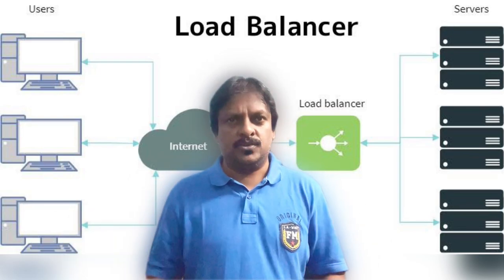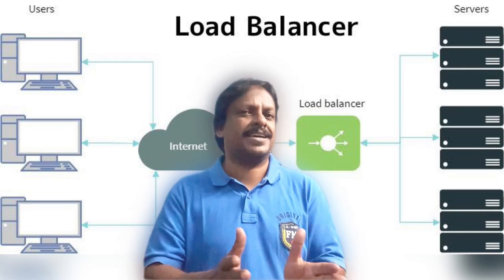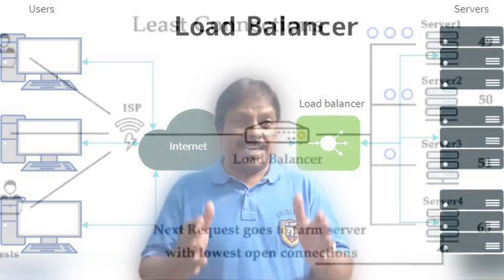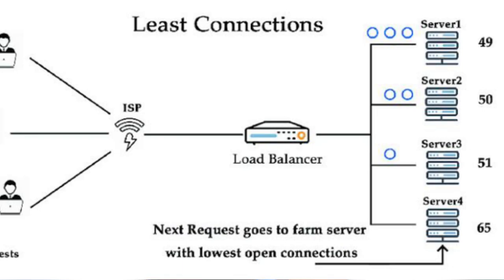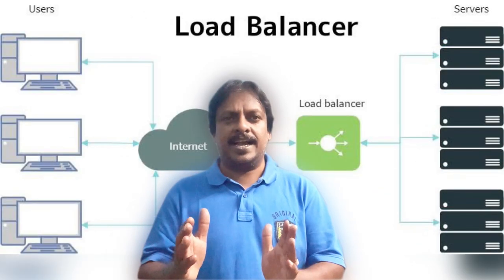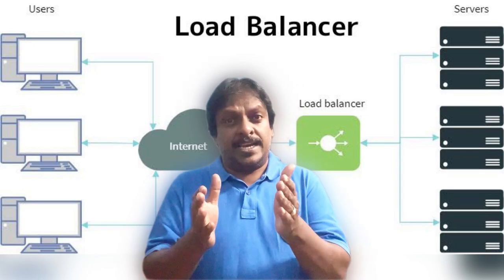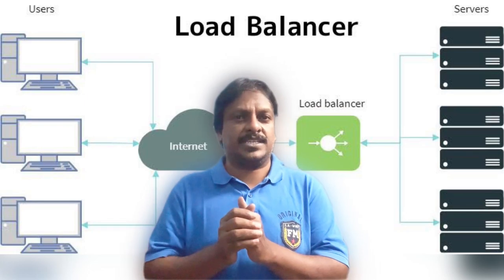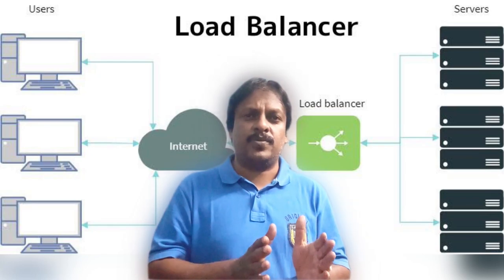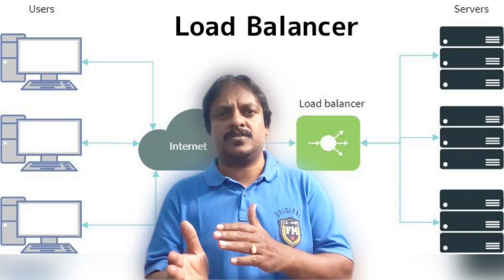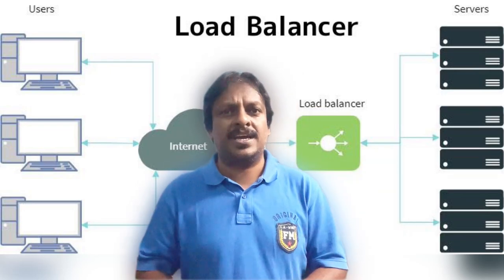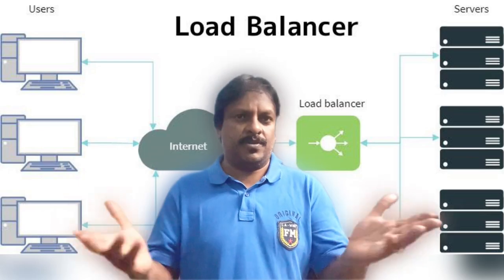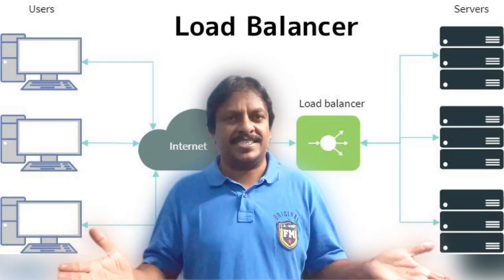That's how the weighted round robin load balancing algorithm works. Our next load balancing algorithm is least connection. When a request comes from a client, the request will go to the server with the least number of active connections. That's how the least connection algorithm works.